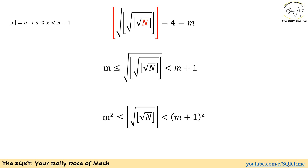If we want to remove the floor function shown in red, then the expression inside the floor function is going to be between m and m plus 1, greater than or equal to m. Since the square root of that expression is between m and m plus 1, to remove the square root we square both sides, and we get that the expression is between m squared and (m+1) squared.